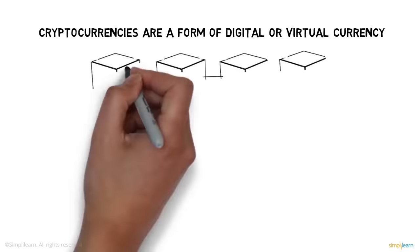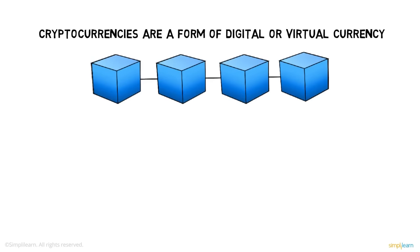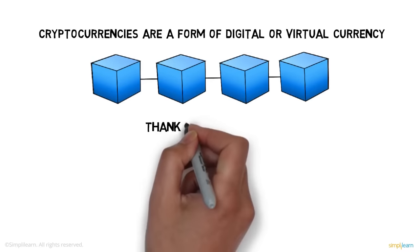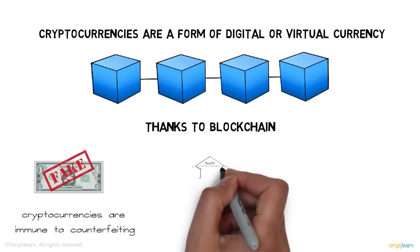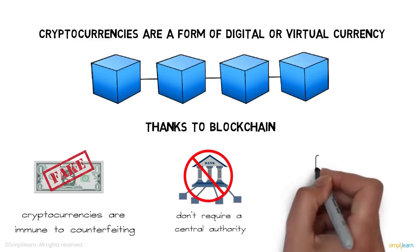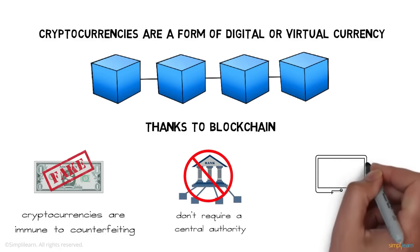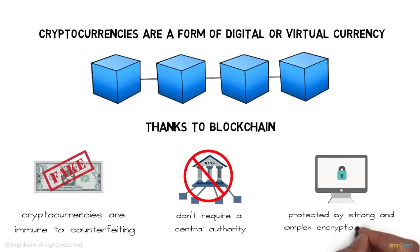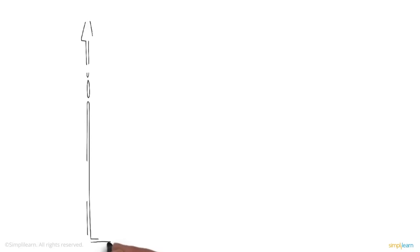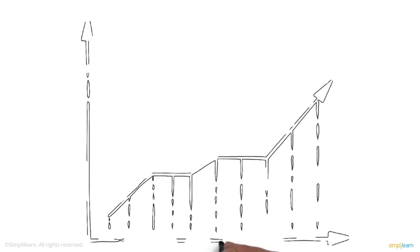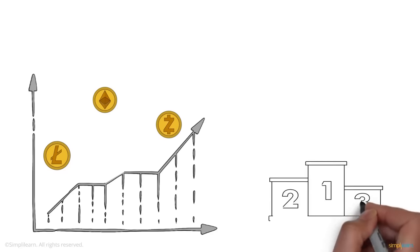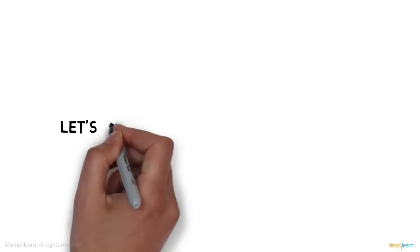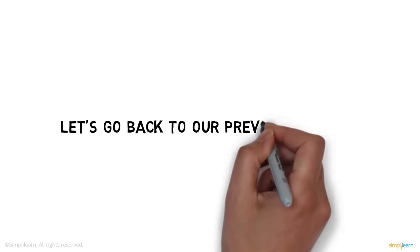To solve these problems, the concept of cryptocurrency came into existence. Cryptocurrencies are a form of digital or virtual currency that run on a technology known as blockchain. Thanks to blockchain, cryptocurrencies are immune to counterfeiting, don't require a central authority, and are protected by strong encryption algorithms. In a market of thousands of cryptocurrencies like Litecoin, Ethereum, and Zcash, one reigns supreme: Bitcoin.